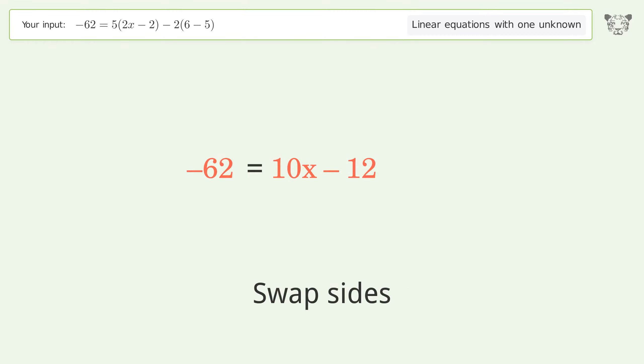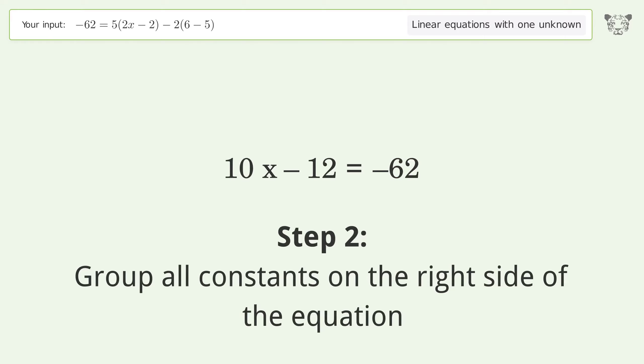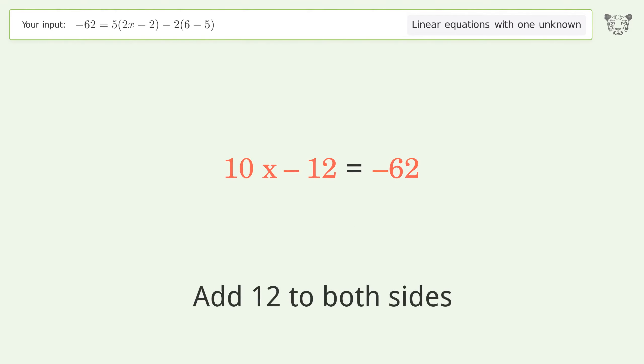Swap sides. Group all constants on the right side of the equation. Add 12 to both sides. Simplify the arithmetic.